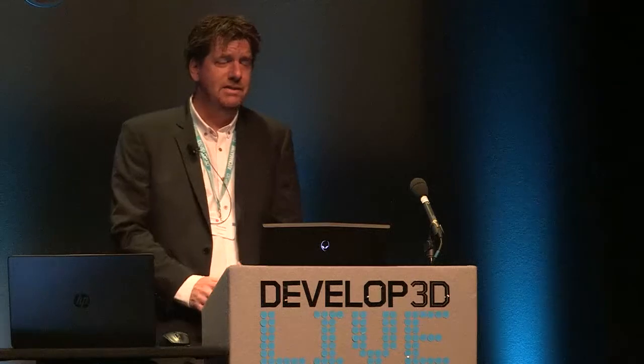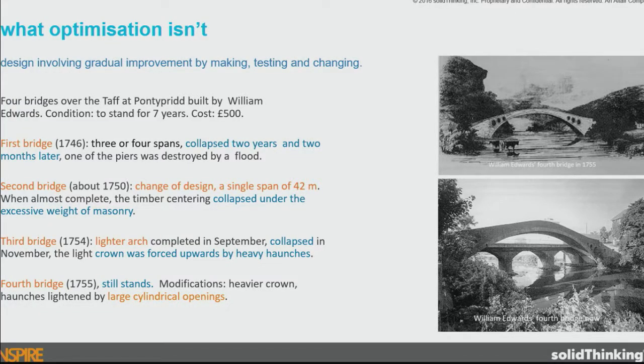Just as important as what optimisation is, what optimisation isn't is equally important. People are always saying, 'Oh I optimised that,' and maybe you didn't. There's the case of the fourth bridge — not the one in Scotland, but the four bridges over the Taff. The first bridge collapsed after two years when one of the piers was destroyed by flood, so they built bigger piers and it collapsed under the weight of the excessive masonry. So they built one with a lighter hutch and it collapsed while they were building it. The fourth bridge still stands, but that iterative changing is not optimisation — it's iterative design. It's what we've been doing for hundreds of years, but it's not optimisation, which is what we should be doing.